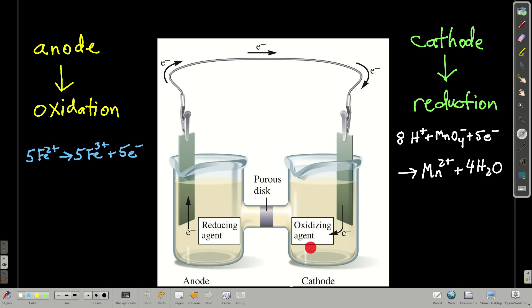Now what's going to happen is that the, whatever the anion is, is going to flow through this porous disk over here, balancing the charge. And electrons continue to flow.